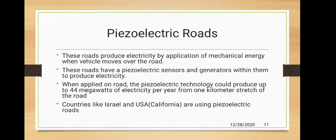Another method is piezoelectric roads, using piezoelectricity to generate electricity. The word piezoelectricity means electricity resulting from pressure, derived from the Greek word 'piezen' meaning to squeeze or press, and 'electron' meaning amber, an ancient source of electric charge. Roads which produce electricity by application of mechanical energy when a vehicle moves over them are called piezoelectric roads, which have a piezoelectric sensor within them.